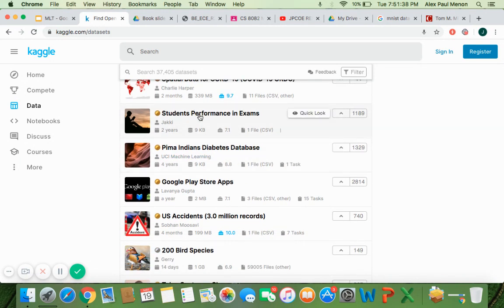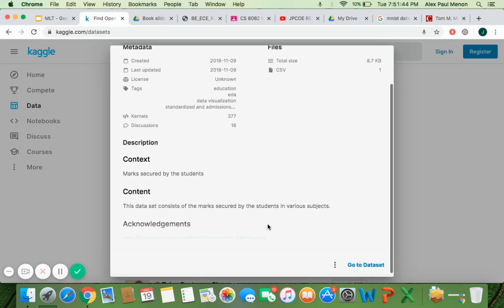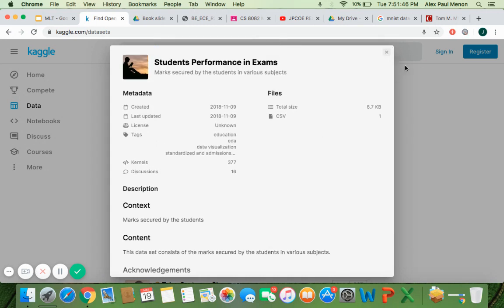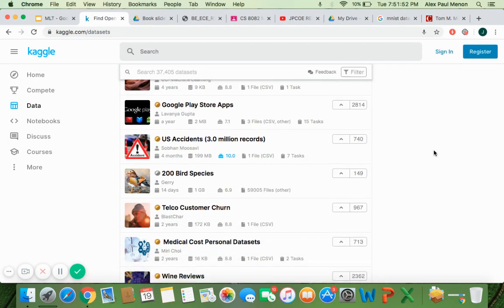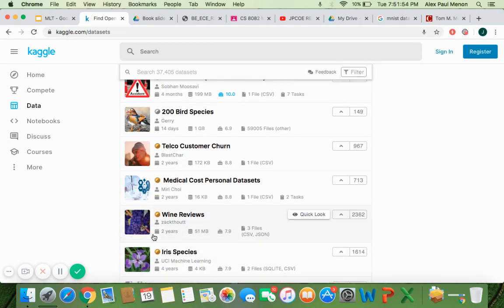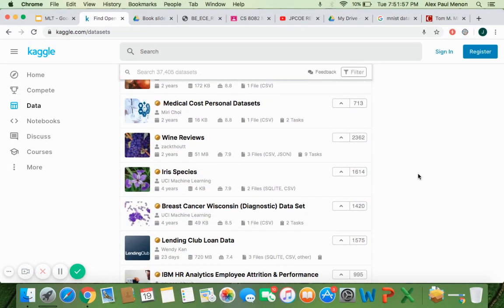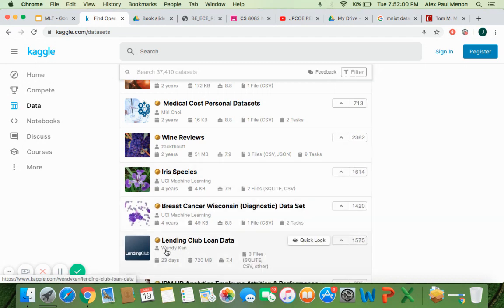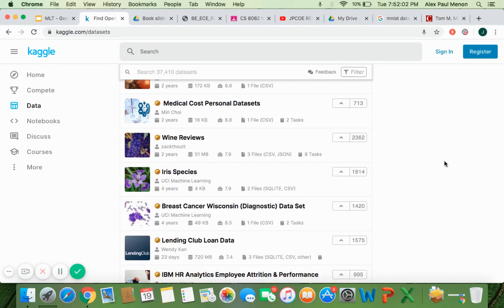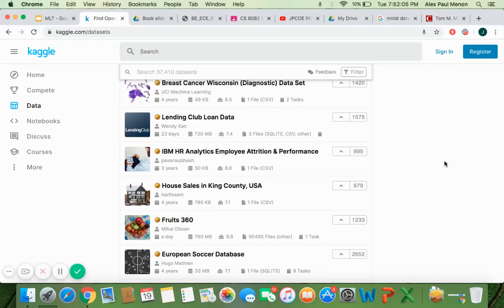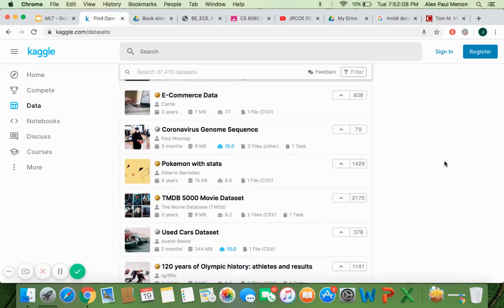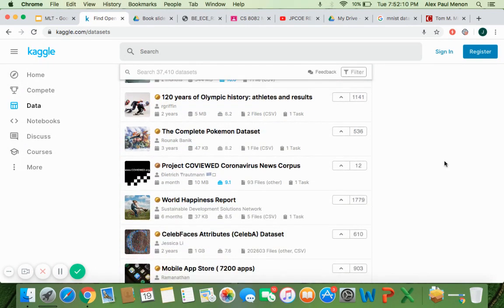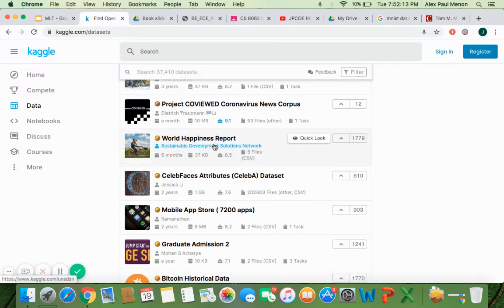Student's performance in exam is a simple data set where you can look at what is the mark secured by the student in various subjects. And from that, we can try to find what will be the performance in the future. And predicting which are the iris species, predicting what is the name of the flower, predicting the breast cancer. So there are a lot of other data sets like this, n number of data sets that are available. So you can find all of them on Kaggle.